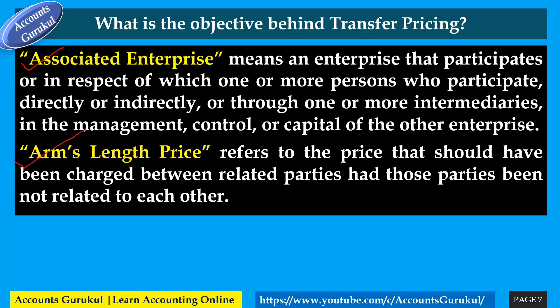Arm's length price refers to the price that should have been charged between related parties had those parties not been related to each other. Whatever price you charge in third-party transactions — that same price, or more — should be used in intercompany transactions. This concept ensures that intercompany transaction prices are consistent with what would be charged between unrelated independent parties.